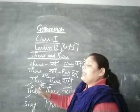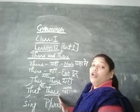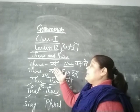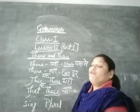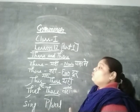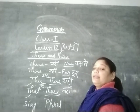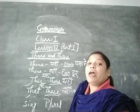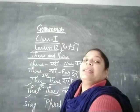This and that are singular subjects, while these and those are used for plural. These are near and those are far. You can use your notebook and learn it. We will meet in the next video with the remaining part of this lesson. Till then, bye, take care.